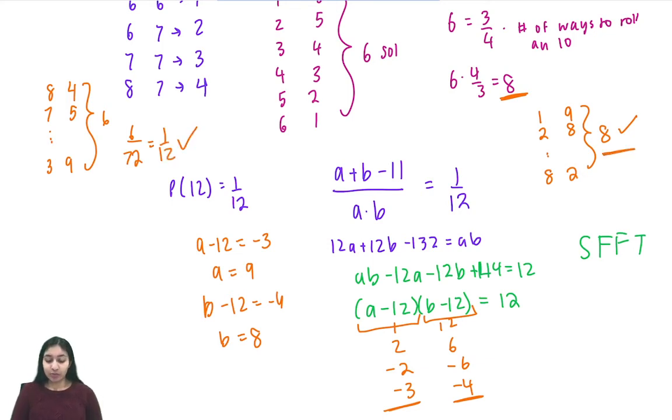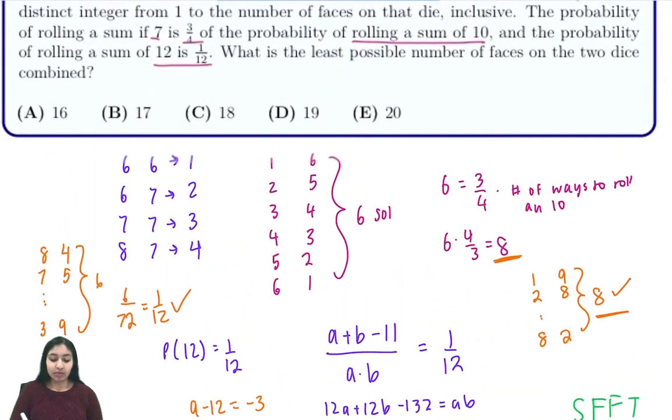So now that we've confirmed that eight-nine works we know it's the smallest, so our answer is going to be eight plus nine which is 17.